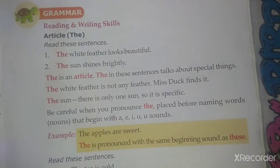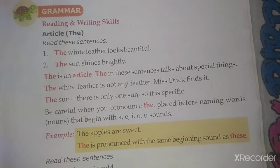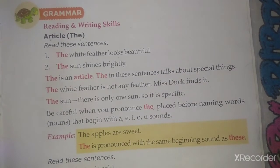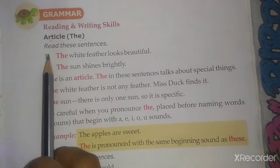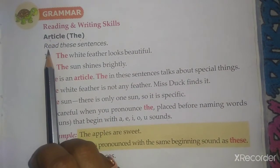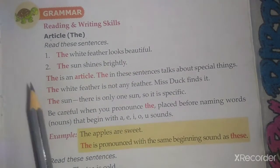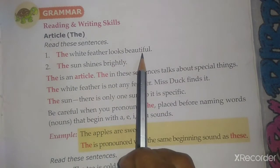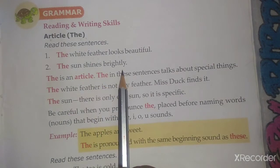Please open page number 75. You have an exercise. First, I will help you out to know from which sentences I will be using 'the'. Now let's start reading: The white feather looks beautiful. The sun shines brightly.